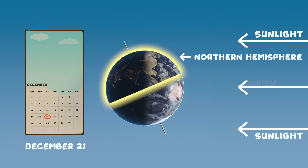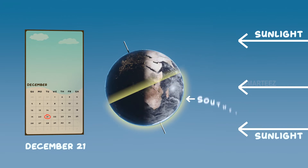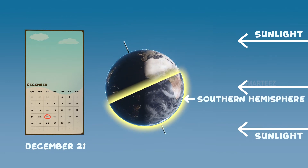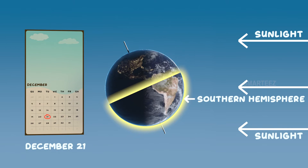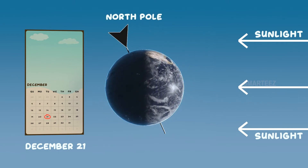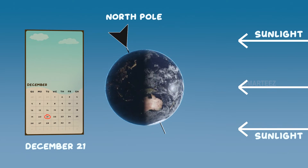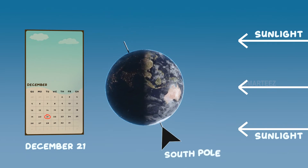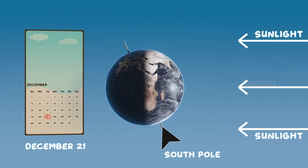While this part of the earth experiences shorter days, the southern hemisphere experiences longer days and more direct sunlight, leading to summer. The north pole receives no sunlight and the nights are the longest with no daylight, while the south pole has sunlight all day with no nights.